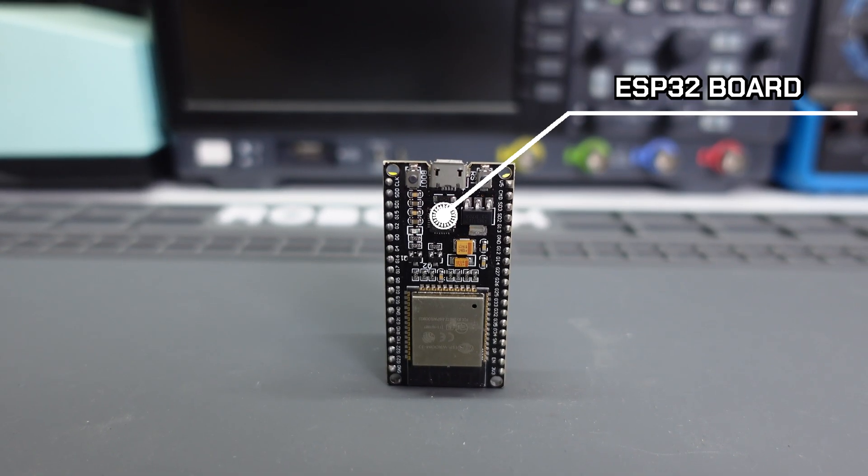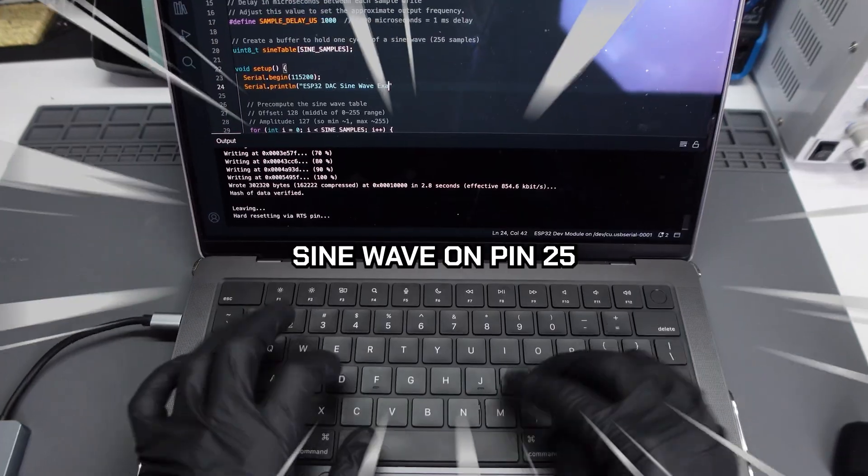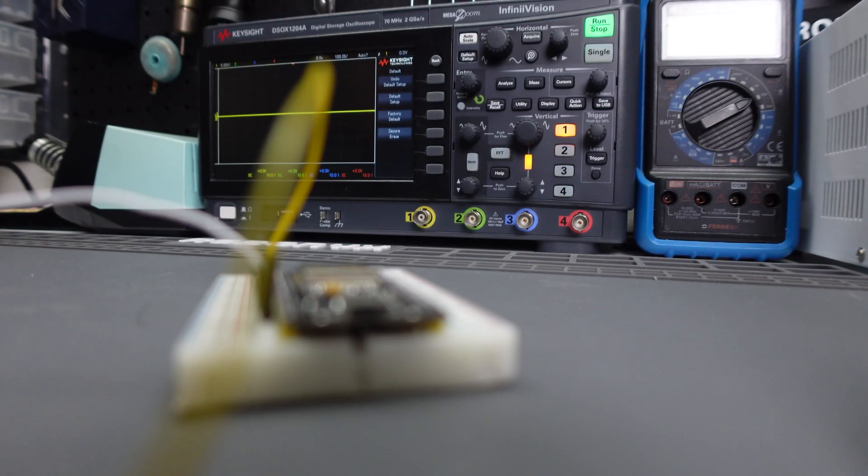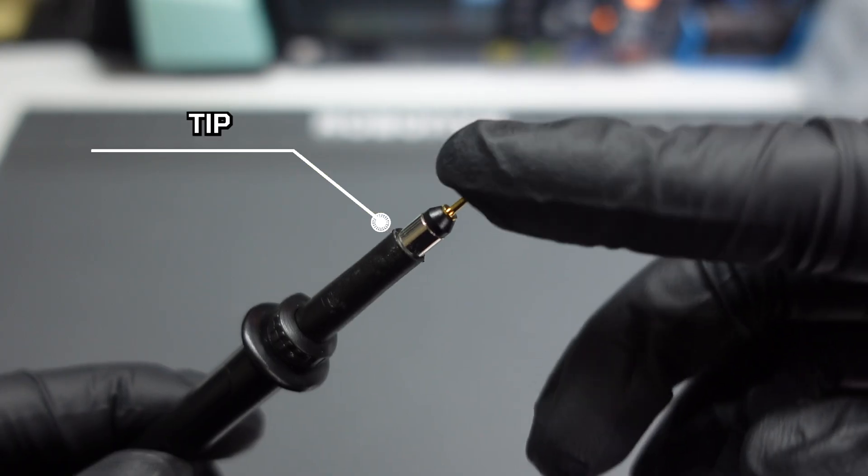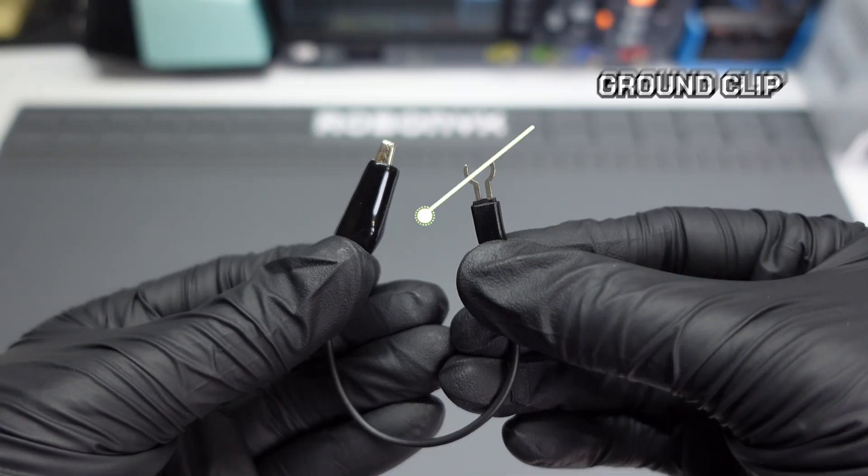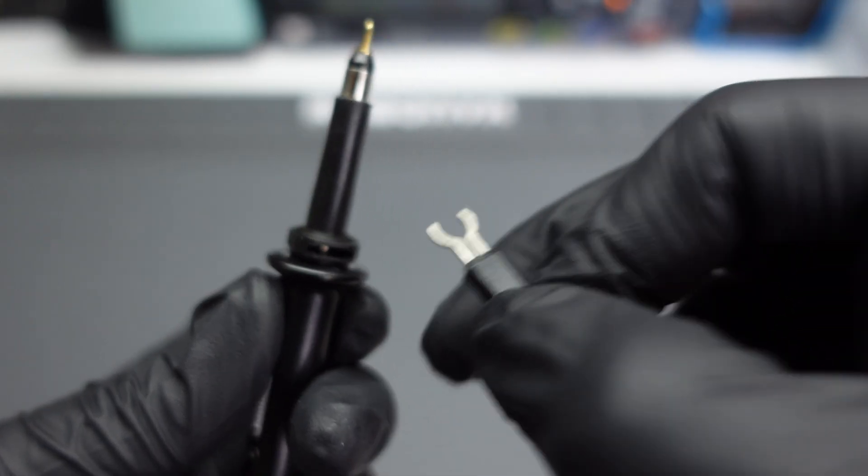This is an ESP32, and I've programmed it to generate a sine wave on pin 25. To connect this circuit to our scope, we use a probe, which has a tip on one side and a connector on the other side. You also need the ground clip, which you insert into the side of the probe.